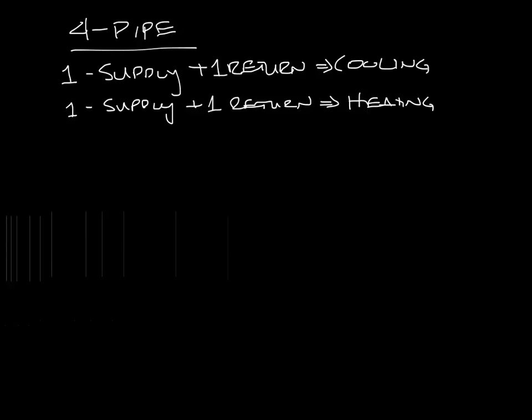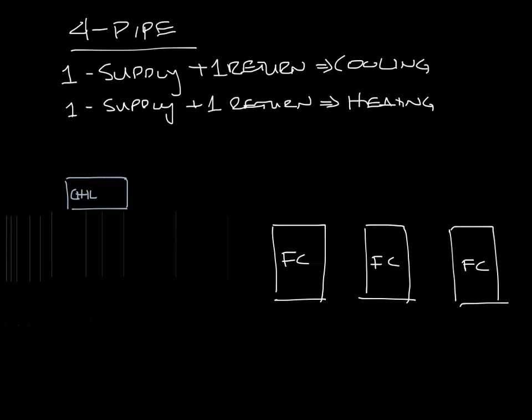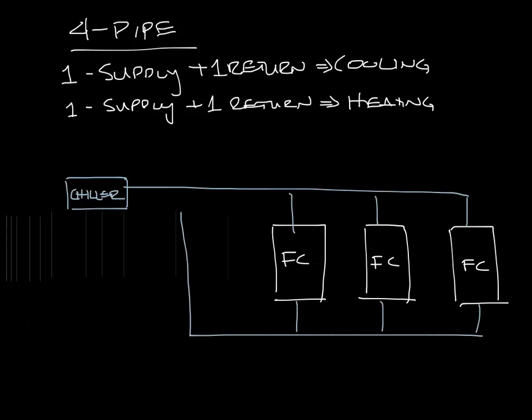So let's draw in our three fan coils again. And now let's draw in our chiller and draw a supply line to the fan coils and a return line. And we'll draw in a boiler and give it a supply line and a return line.